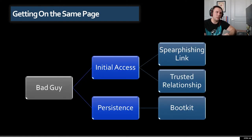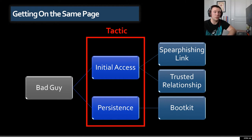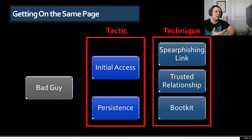Just to make sure we're on the same page, I've been throwing out 'tactic' and 'technique' a lot, so let me clarify the terminology. When I say tactic, I'm talking about the overarching goal or objective the bad guy is trying to accomplish — for example, establishing initial access or gaining persistence. Those are tactics. The way they accomplish those tactics is through techniques. To achieve initial access, a bad guy might use the technique of a spear phishing link or exploit a trusted relationship. To achieve persistence, they might use a boot kit as the technique.